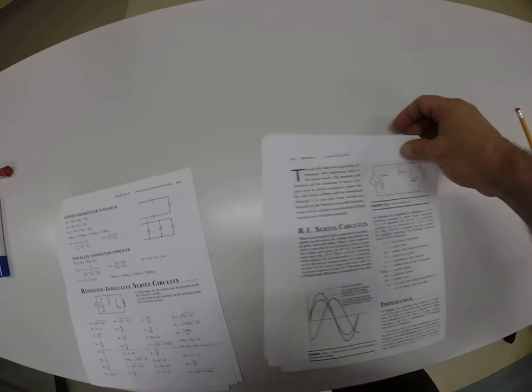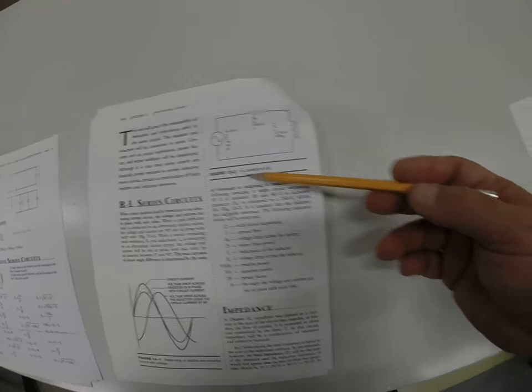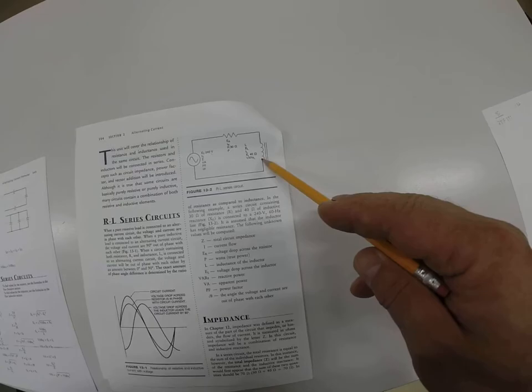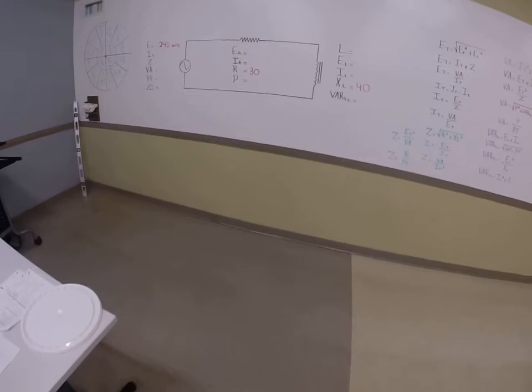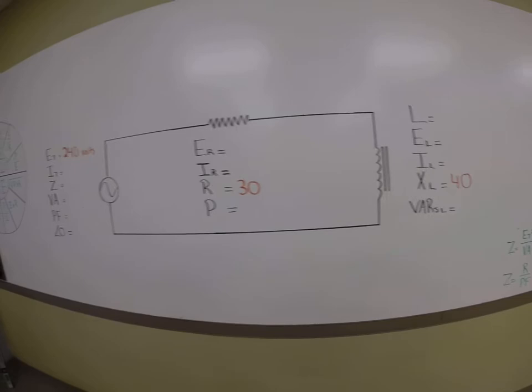What I want to show you is the example that they're doing in the book. It starts on page 206, Figure 13-2, and they give you a couple of quantities here. They give us total voltage, they give us resistance, and they give us inductive reactance. So what I'm going to do now is come over to my picture, which is exactly the same one that's inside your packet. We have resistance, we have inductive reactance, and now we're here saying to ourselves, where do we start?